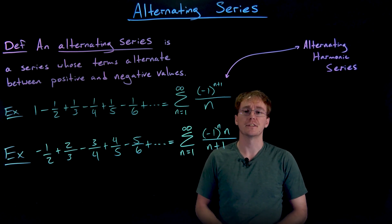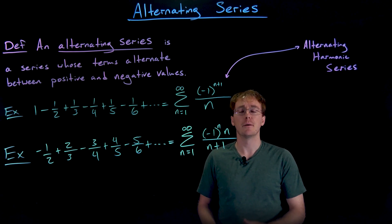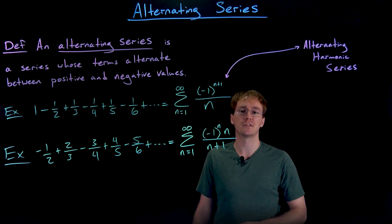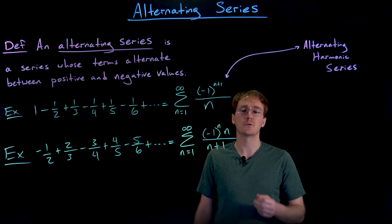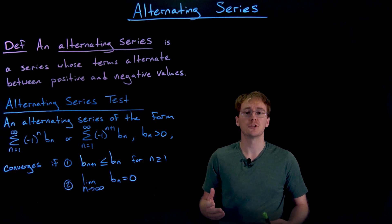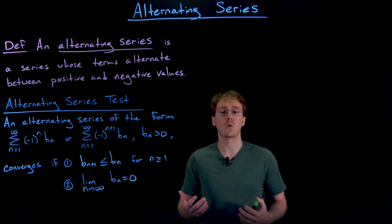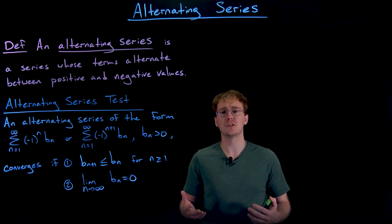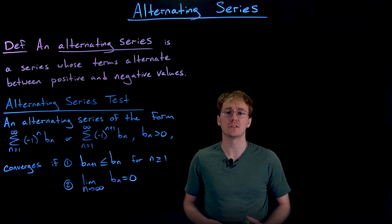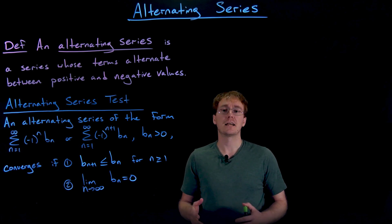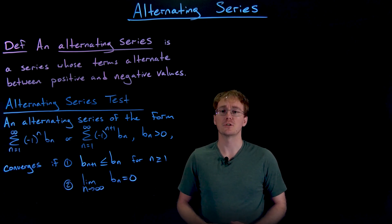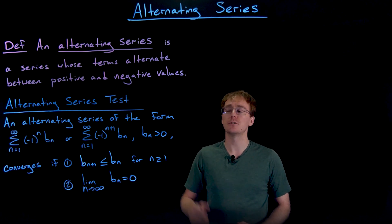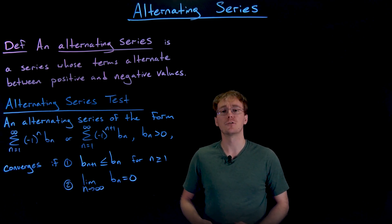That first alternating harmonic series is convergent, and we'll soon show that this second example is going to be a divergent series. We're going to encounter alternating series quite often when we discuss power series, and we'll need to know if they converge. It's actually much easier to determine convergence or divergence of an alternating series compared to a non-alternating series, and the way we do that is using the alternating series test.